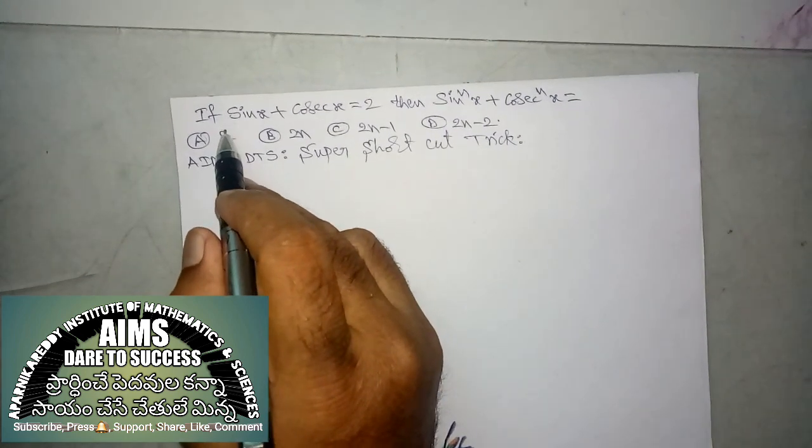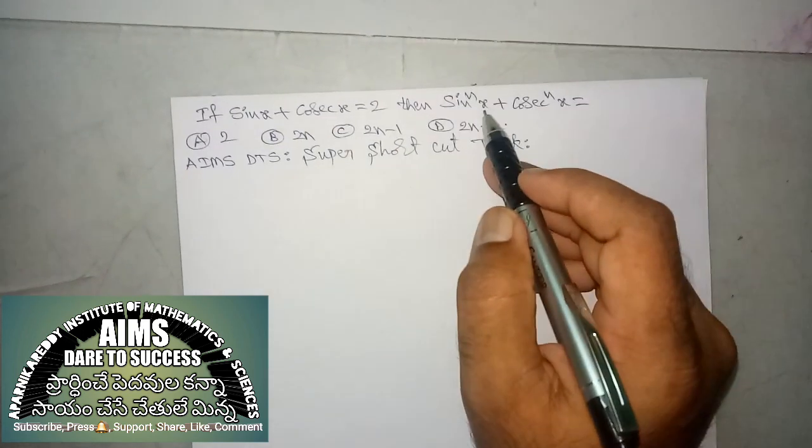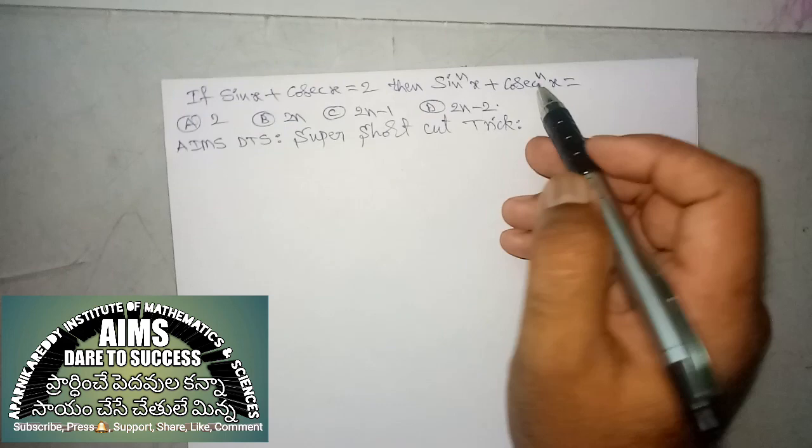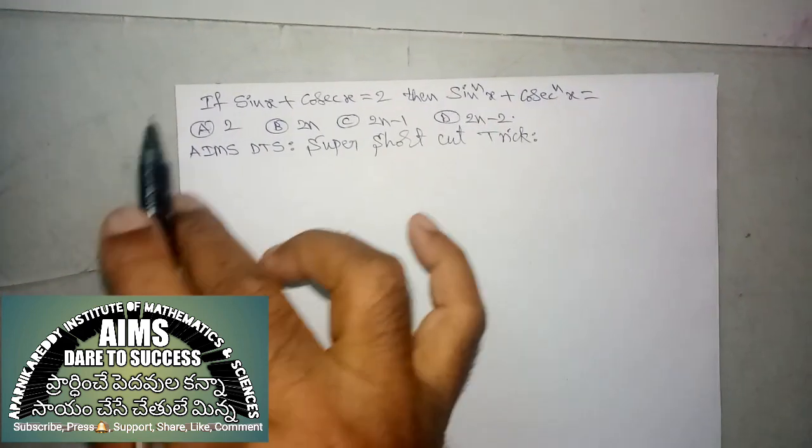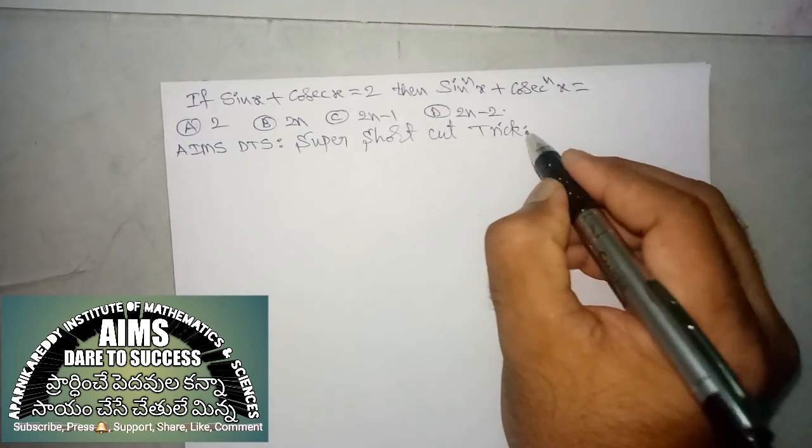The question is, if sin x plus cosecant x is equal to 2, then the value of sin power n x plus cosecant power n x by using the given 4 options. Today, super shortcut trick is,